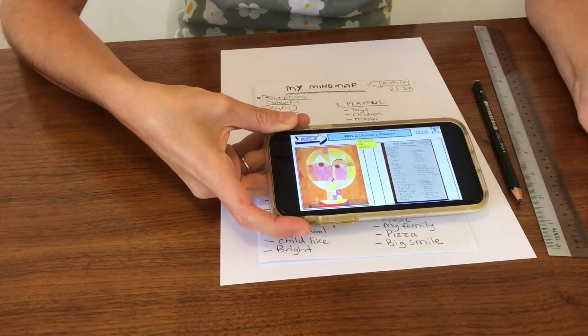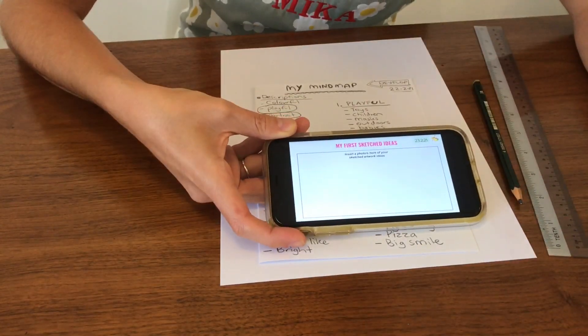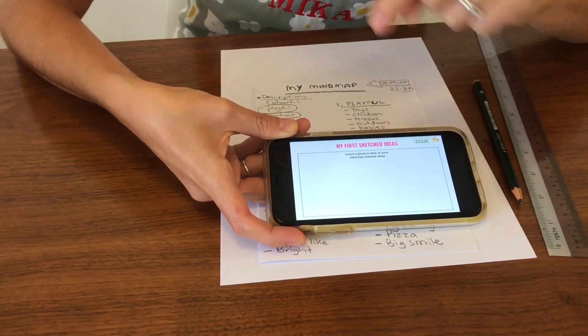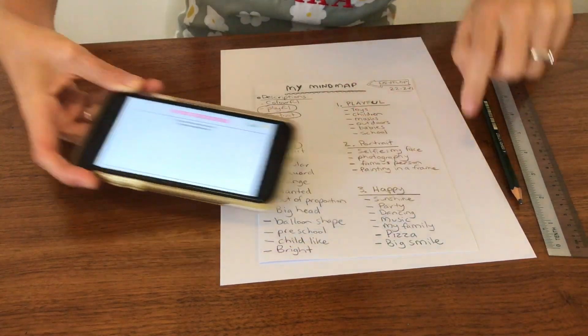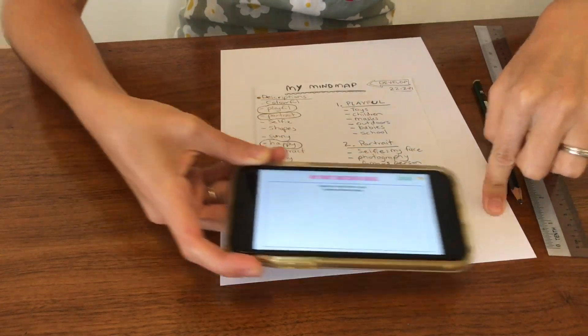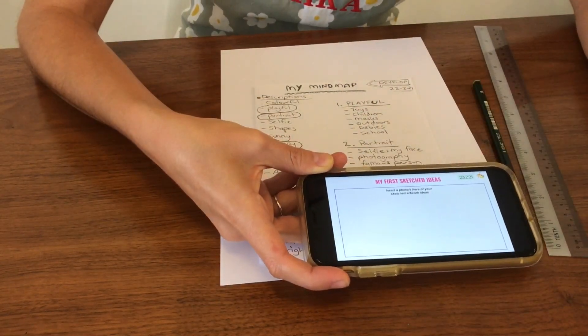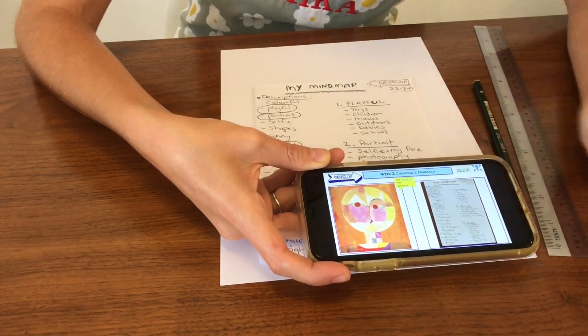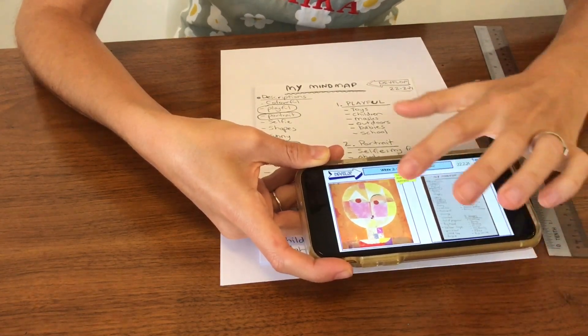Today what we're going to do with whatever sketches we make we're going to add them to our digital sketchbook. We can photograph the drawings that we make and put them in our digital sketchbook. So let's begin today by reviewing our mind map and start with some sketches.